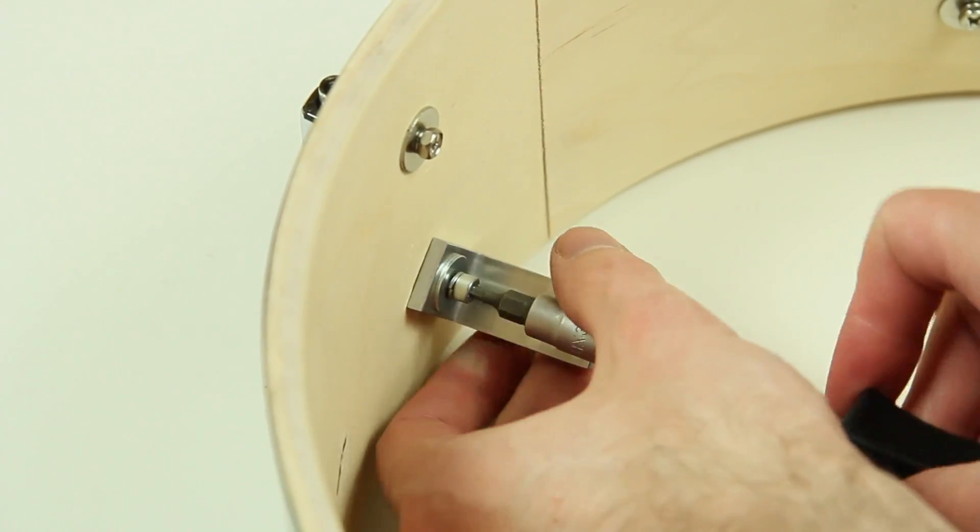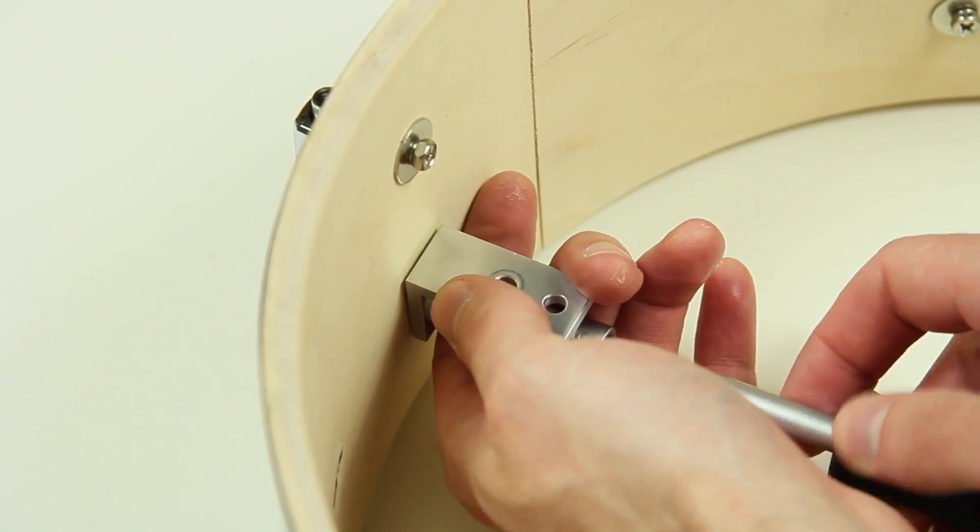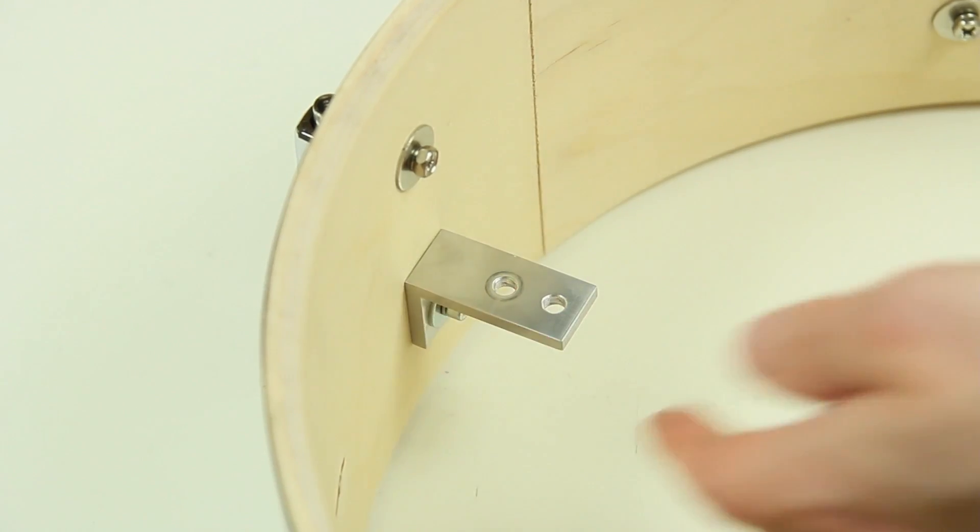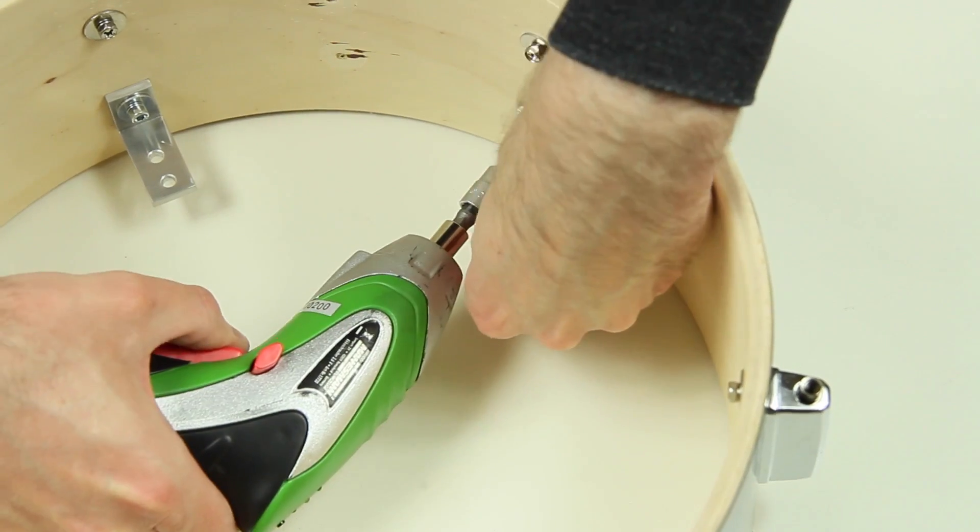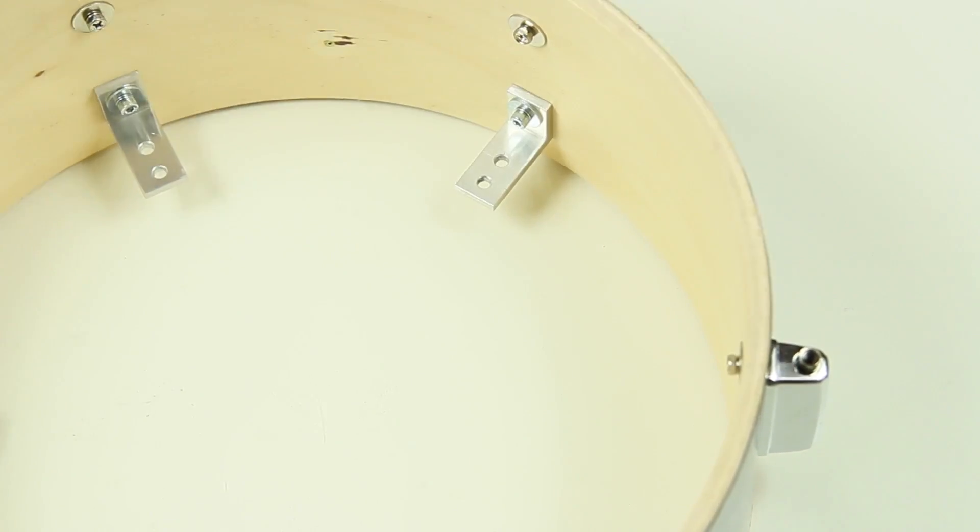The angles can be mounted in 4 different variations, depending on the drum shell. In this case the angles will be applied on the lowest point.